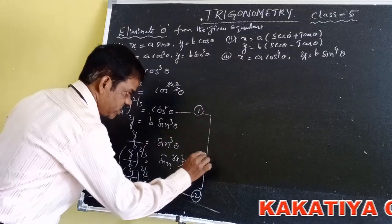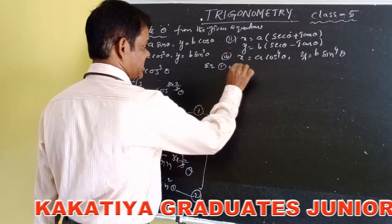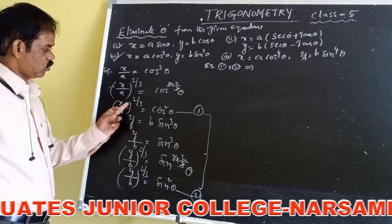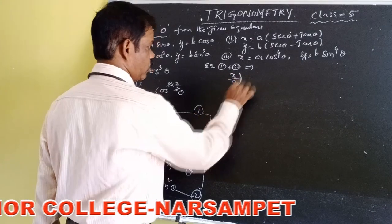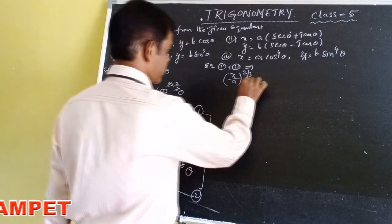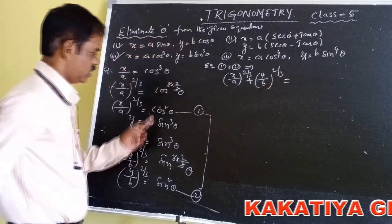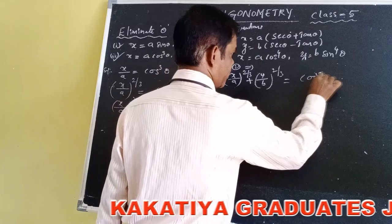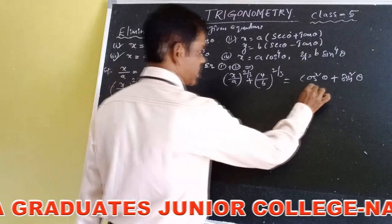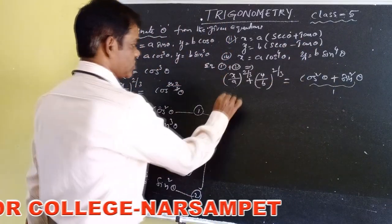Adding both equations: equation 1 plus equation 2 gives (x/a)^(2/3) + (y/b)^(2/3) = cos²θ + sin²θ. What is the value of cos²θ + sin²θ? It equals 1. Therefore, theta is eliminated.